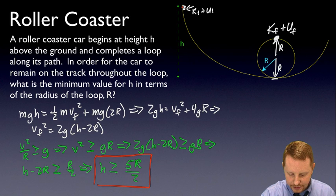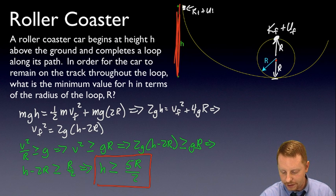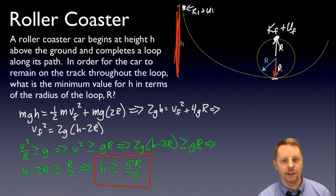In order for this to work, the initial starting height h must be greater than or equal to 5 halves or 2.5 times whatever that radius, assuming it's frictionless. If we pull friction into the equation, h is going to have to be even higher than that. A classic problem where we're using conservation of energy to solve for some givens.